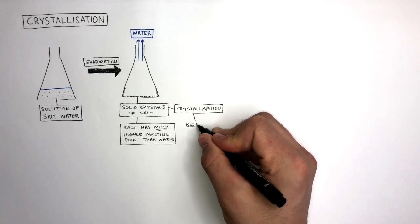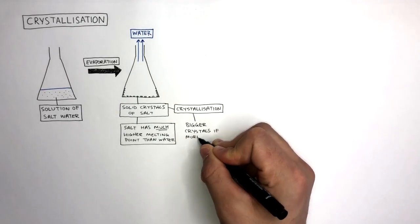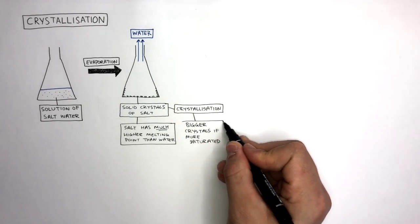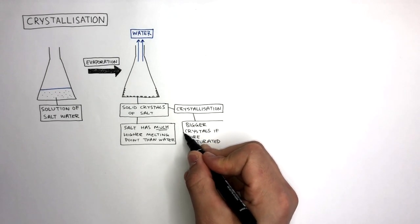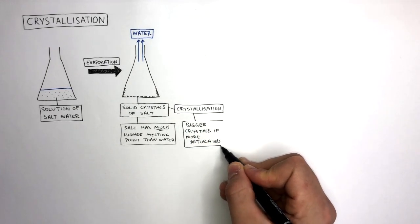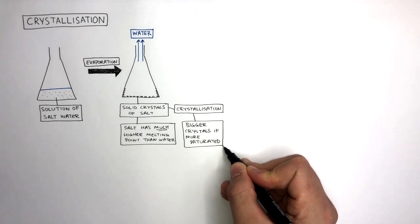Crystallization forms bigger crystals if the solution is more saturated and also if the solution is left for a longer time for the water to evaporate. We're now going to learn what the word saturated means.